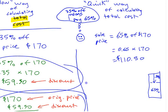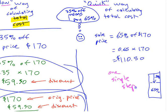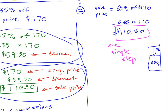That gives you $110.50. Do you see why this one's called the quick way and the other is the slow way? One single step gets you to your answer instead of two steps.